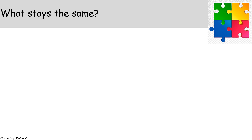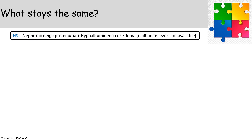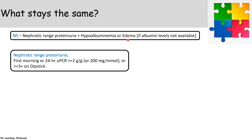What stays the same in these guidelines is that nephrotic syndrome comprises only two criteria: first, nephrotic range proteinuria; and second, any evidence of hypoalbuminemia either on lab or clinically in the form of edema. Nephrotic range proteinuria includes first morning or 24-hour urine protein-creatinine ratio ≥2 g/g or 200 mg/mmol, or ≥3+ on dipstick.